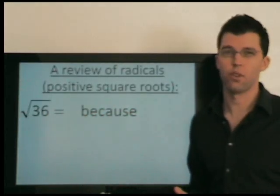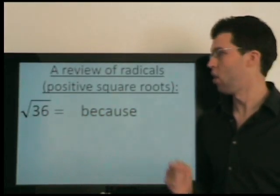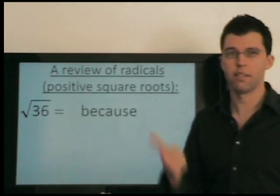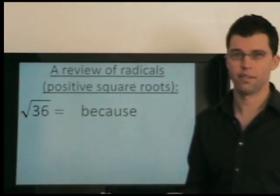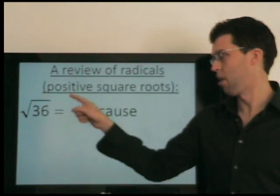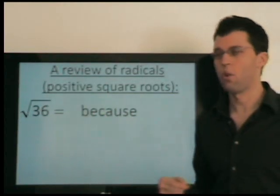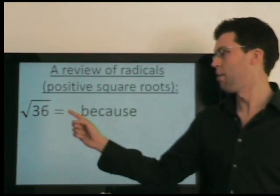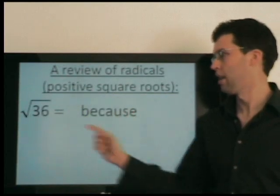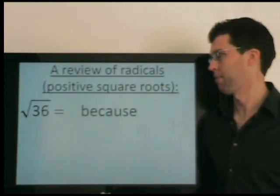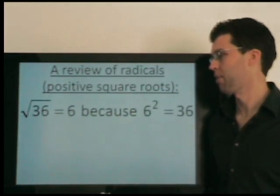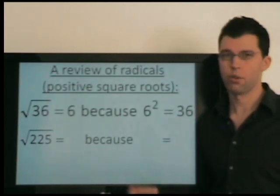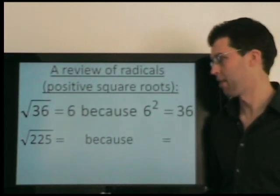Let's review radicals. There are two square roots of 36: positive 6 and negative 6. This radical symbol, though, refers to only the positive square root. So what positive number squared equals 36? Six. What positive number squared equals 225? Fifteen.